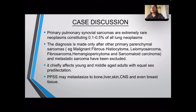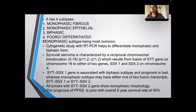PPSS can metastasize to the bone, liver, skin, CNS, and even breast tissue. It has four subtypes: the monophasic fibrous variant, the monophasic epithelial, and biphasic fully differentiated forms. The monophasic subtype is the most common. Our case was a case of the biphasic variant.